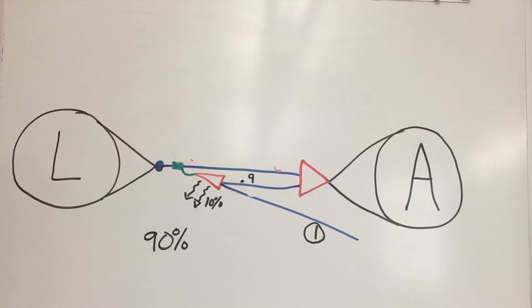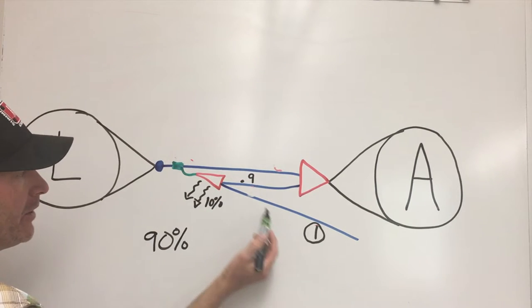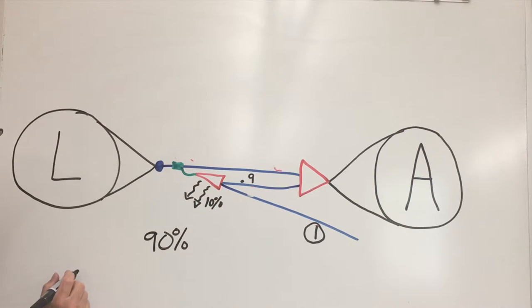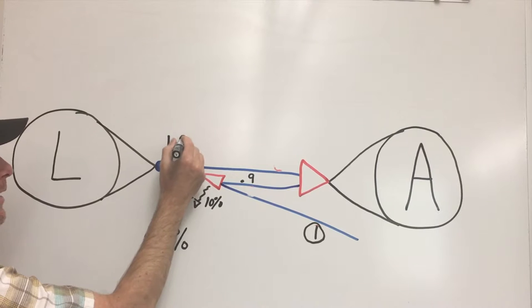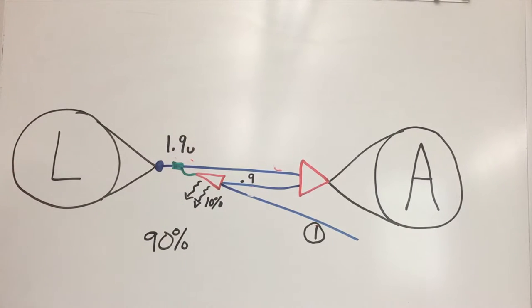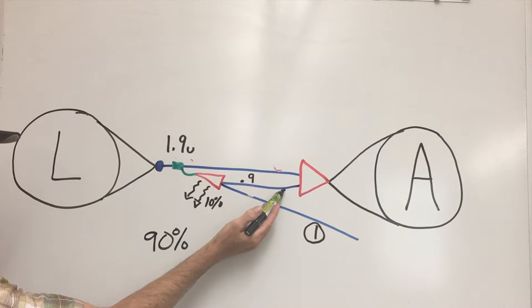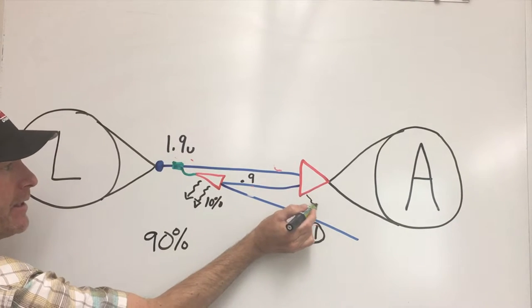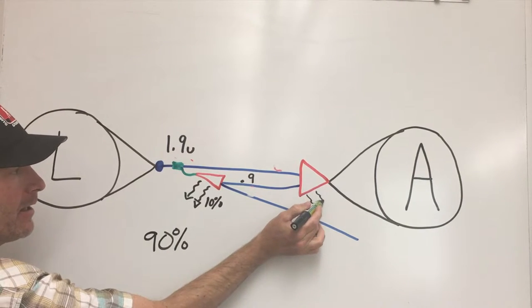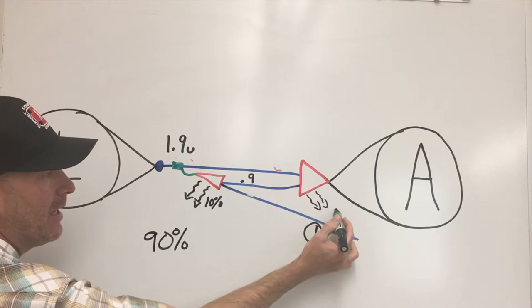Now we can total these up, so one unit here, 0.9 here, our output on the other side of this pulley will then be 1.9 units of output there. Let's continue along, so we've got our 0.9 units here. Once again, as we go through this 90 percent efficient pulley, we're going to lose 10 percent.